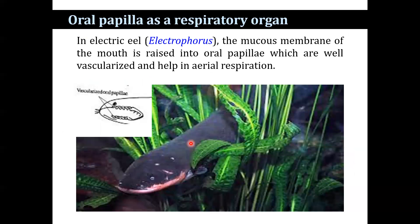Oral papillae are found in Electrophorus, where the gills are degenerate. To compensate, the mucous membrane of the mouth is raised into oral papillae. These oral papillae are well vascularized and help in aerial respiration.